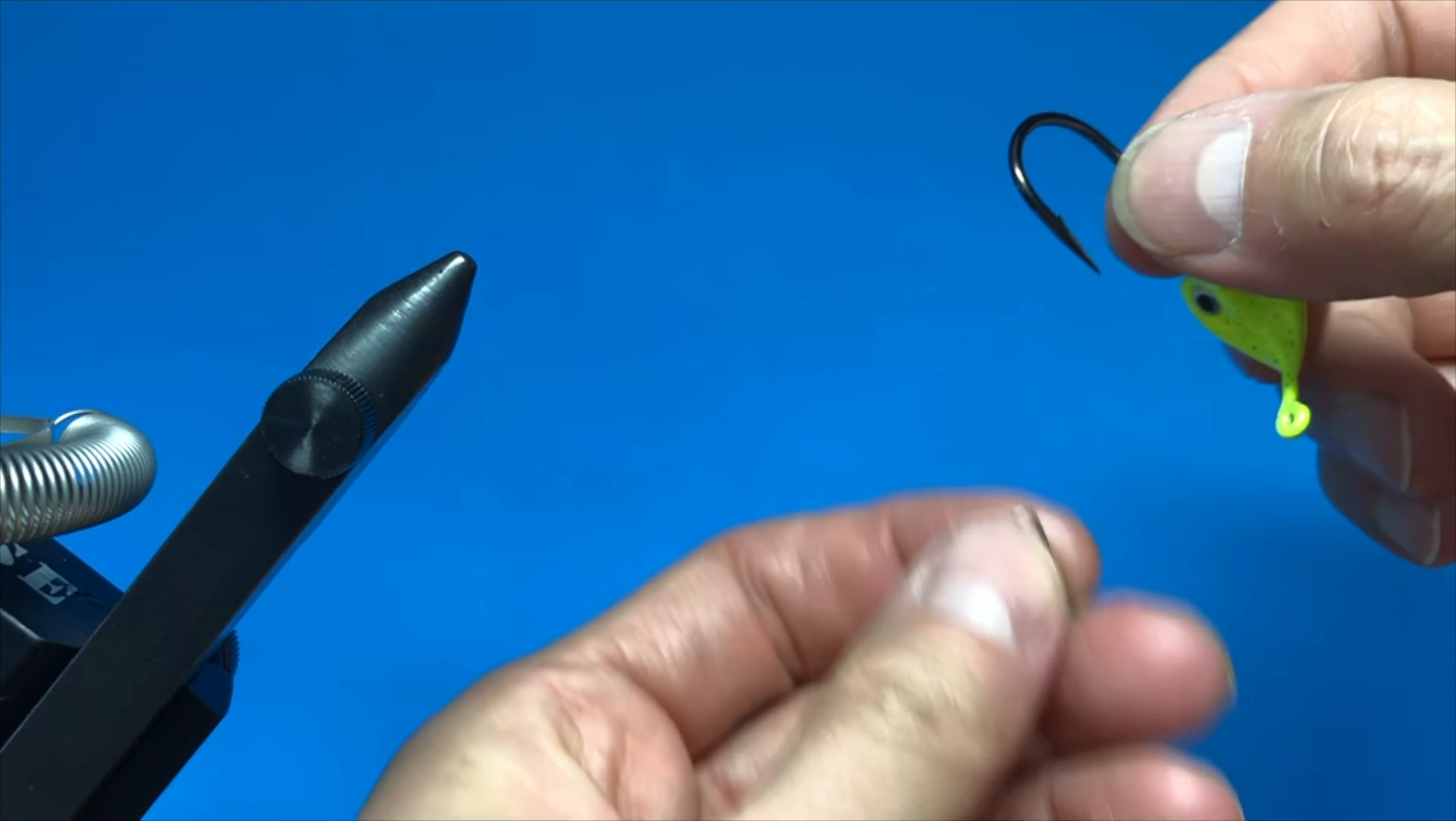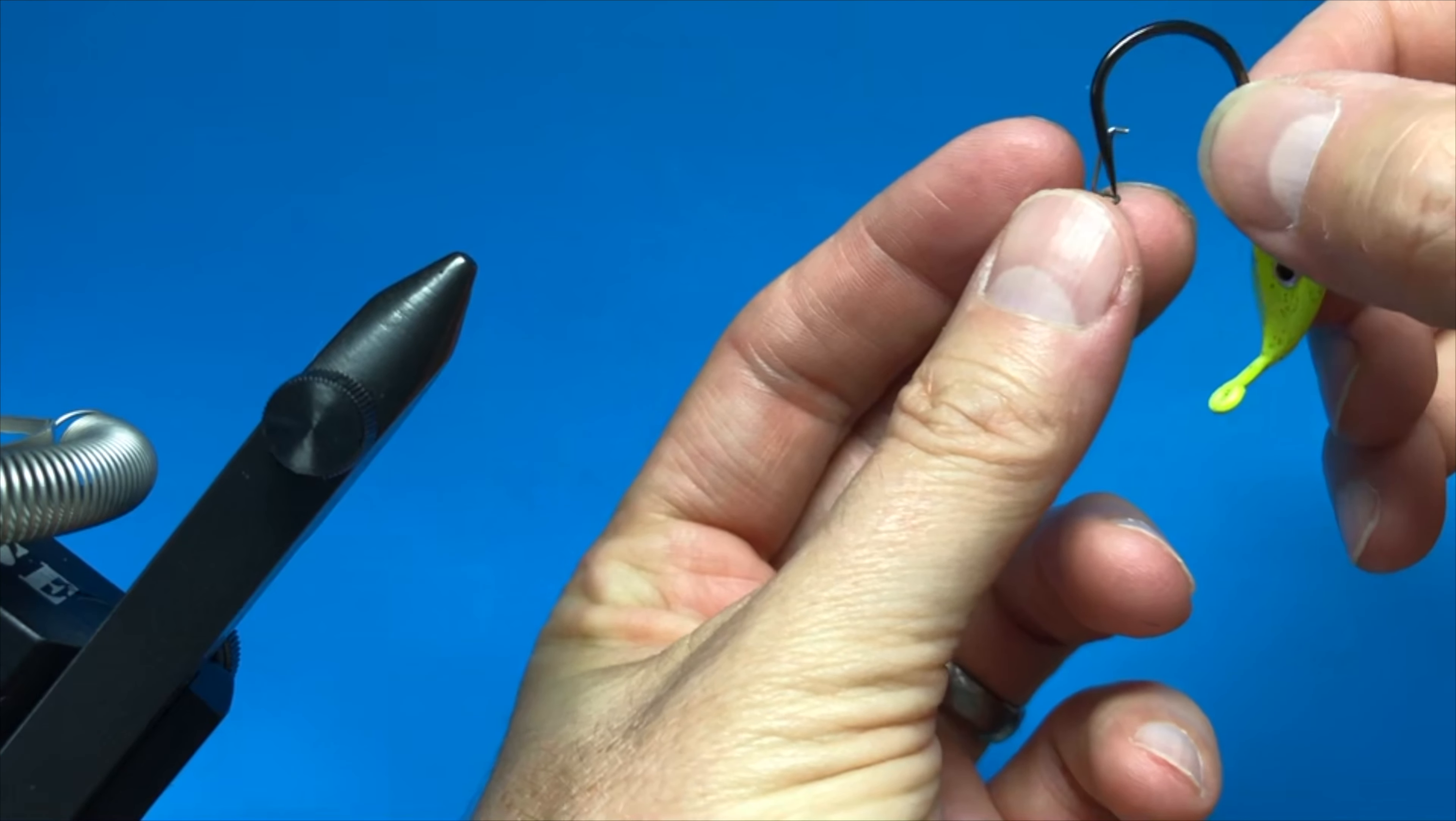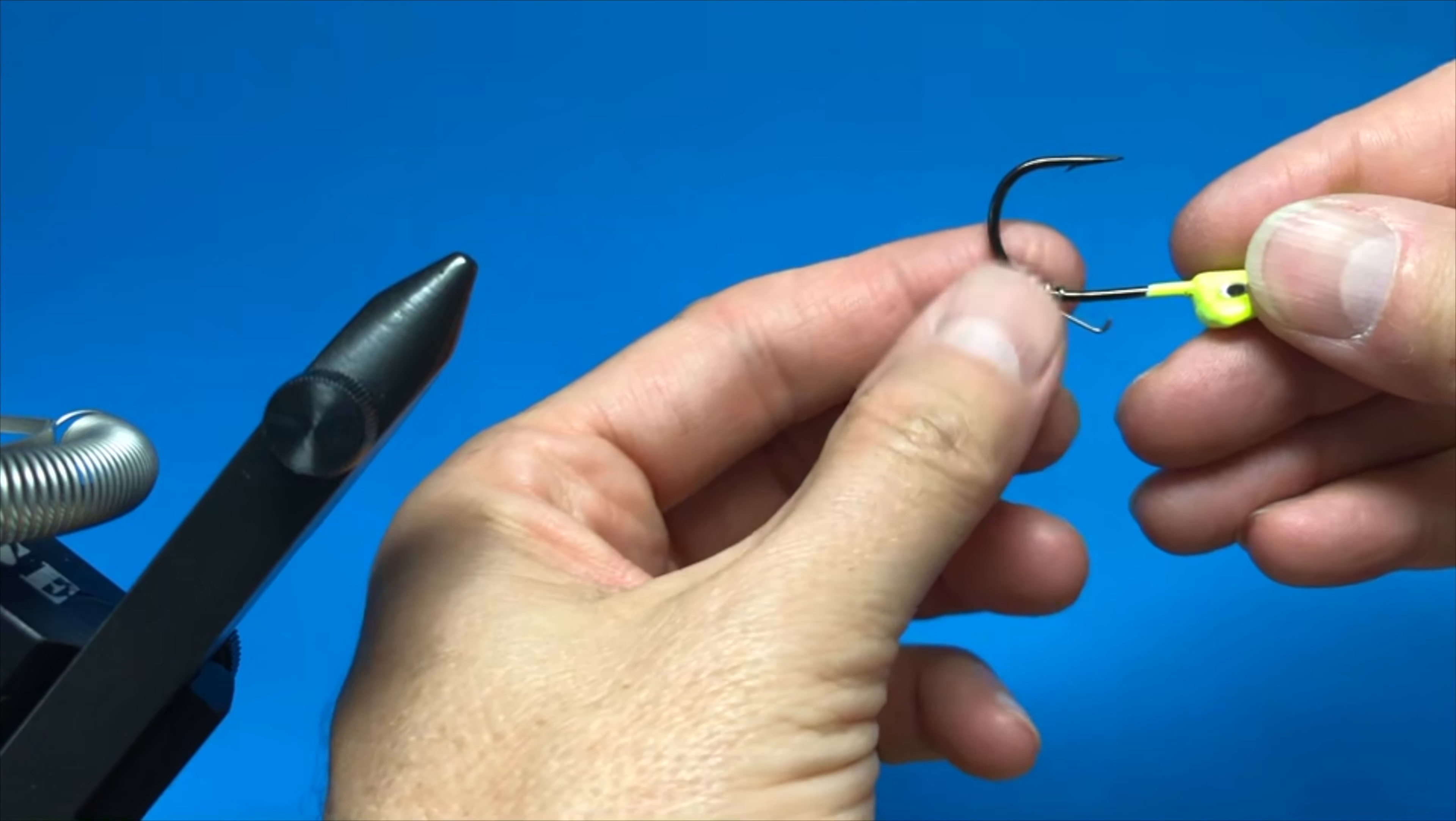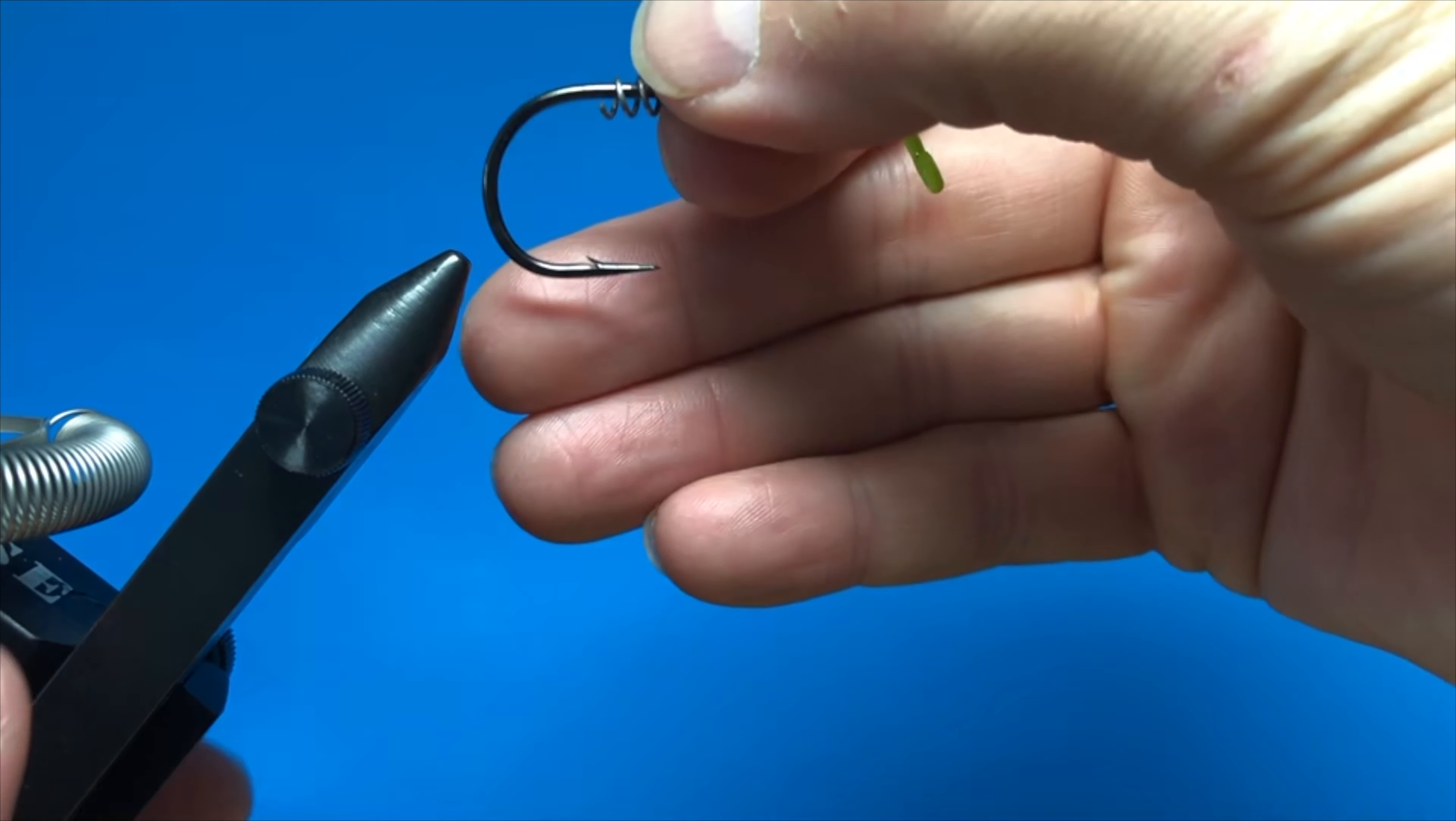You're going to slip it over the hook point and slide it towards the head. Then you're going to put it in your vice.